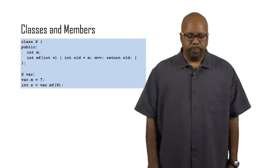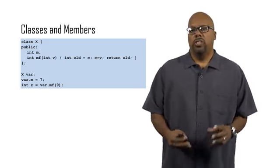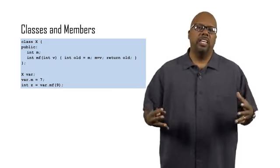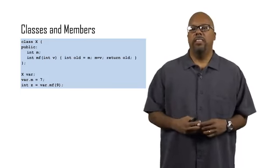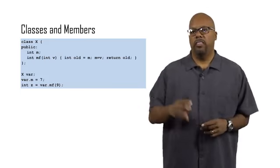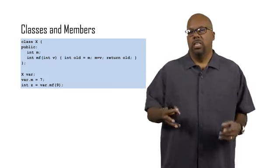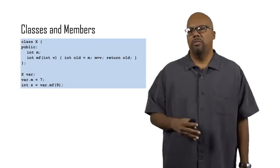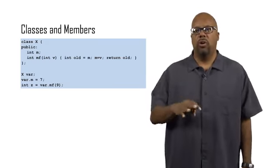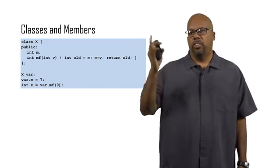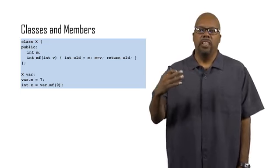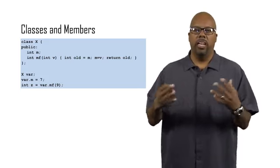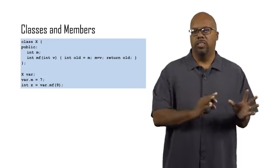Classes basically bring data and functions together and give them a name. So in this example right here, I define a class called X. You can see it says class X, pardon my indentation, it's a little so-so. And there's curly brackets inside class X that you see public. That just means that the data inside there is public. Anybody can see it. We don't need to focus on that.